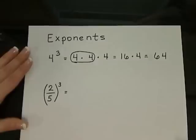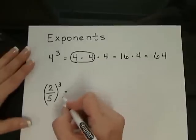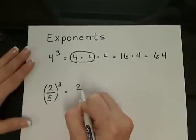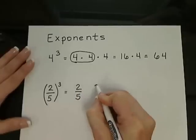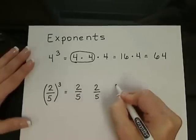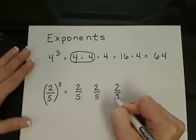If we're working with a fraction, we simply write the fraction multiple times. So 2 fifths to the third power means to write 2 fifths 3 times and multiply.